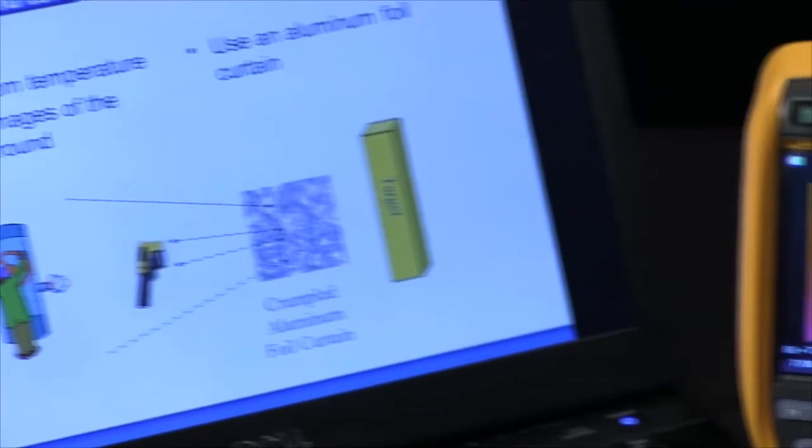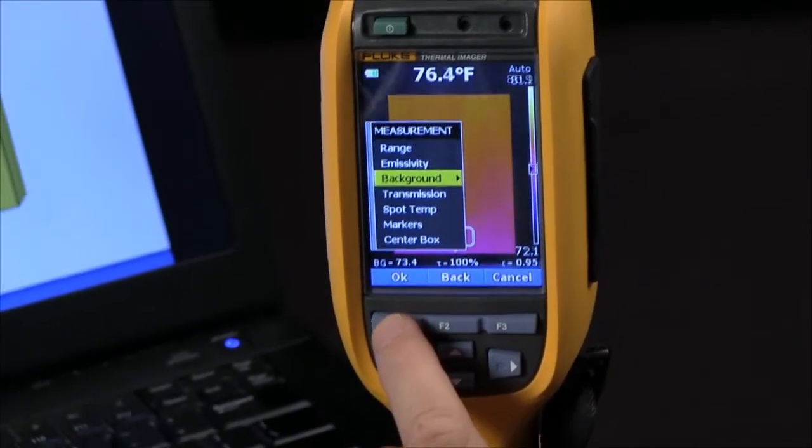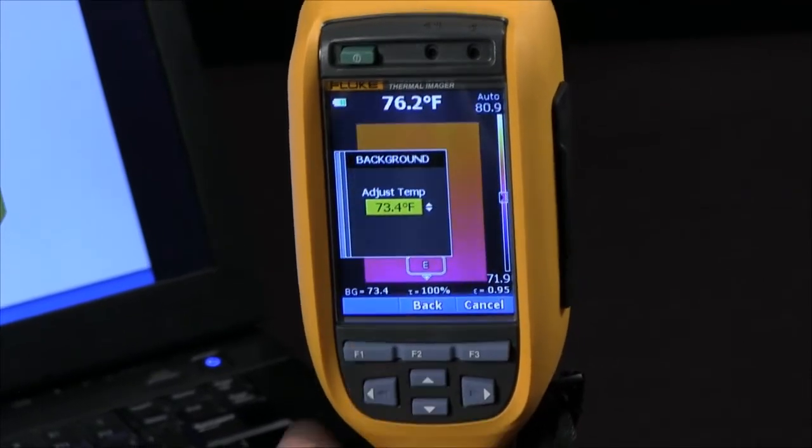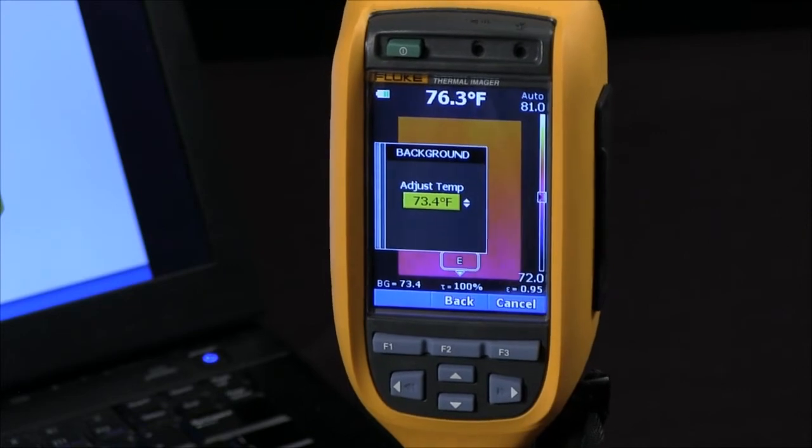The way we enter that is we would go into the menu, go into the measurement menu, select background temperature, and then we can enter in our background temperature.